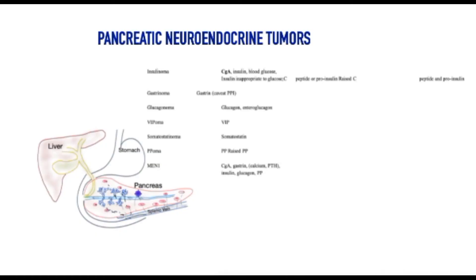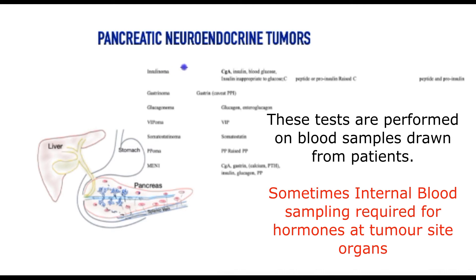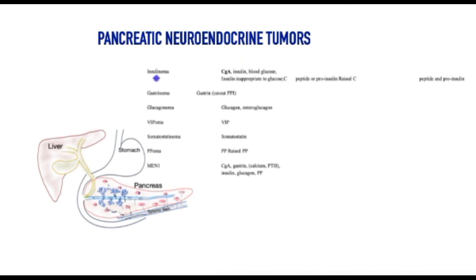Less than half of these tumours will produce hormones, as they arise from hormone-producing cells. It is imperative that we examine the blood and sometimes the urine for high levels of hormones, which will differ for each individual tumour type. Even non-hormone-secreting tumours produce chemicals that serve as markers of tumour activity, such as chromogranin A, ghrelin, and chromogranin B, highlighting the complexity of these tests and the compelling argument for specialist centre treatment.